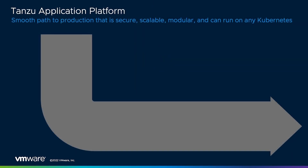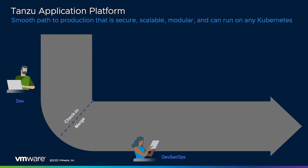Before jumping in, let's take a look at how we clearly define the roles of developers and operators to enable collaboration instead of stepping on each other's toes, by defining an inner loop for developers and an outer loop for operators.